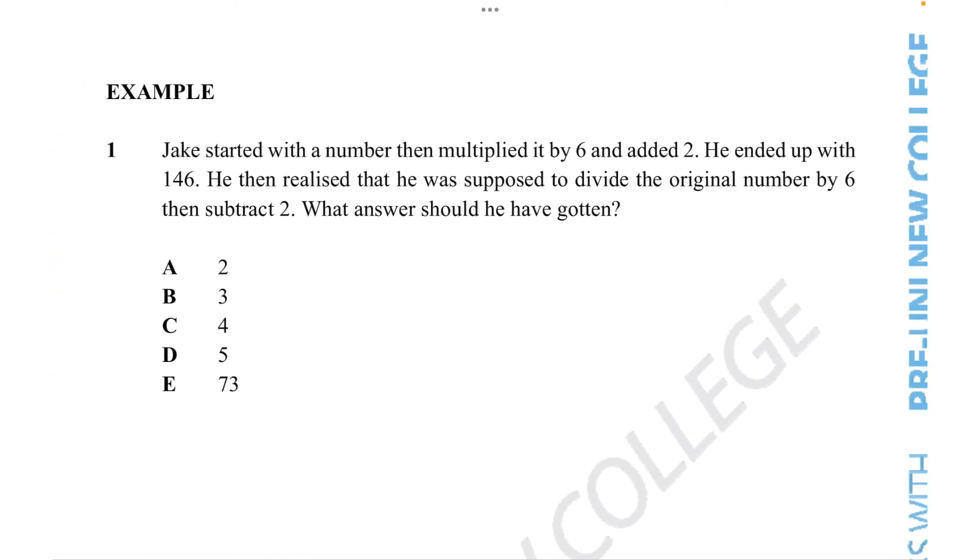Jake started with a number, then multiplied by 6, and added 2. He ended up with 146. He then realized he was supposed to divide the original number by 6, then subtract 2. What answer should he have gotten?